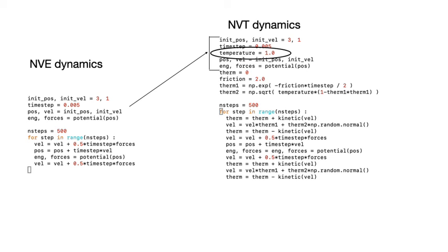Next, notice that the four lines of code that are inside the loop in the NVE code have been copied verbatim into the NVT code here. The new code in the NVT code is this part before the loop that basically initializes the thermostat variables.